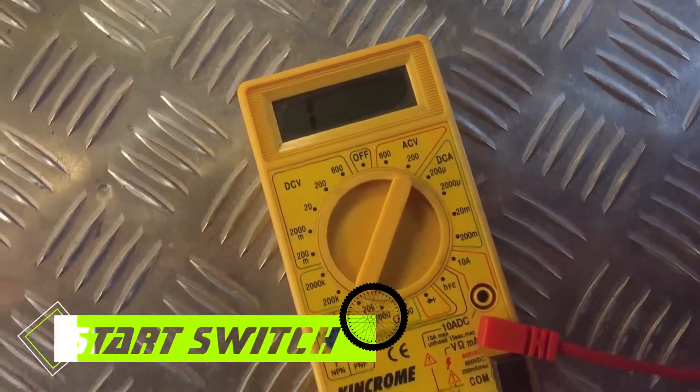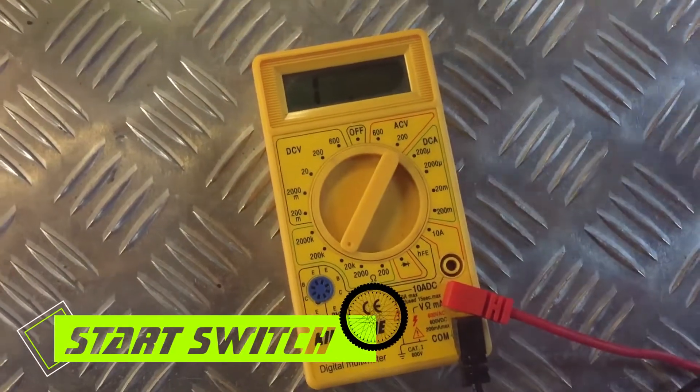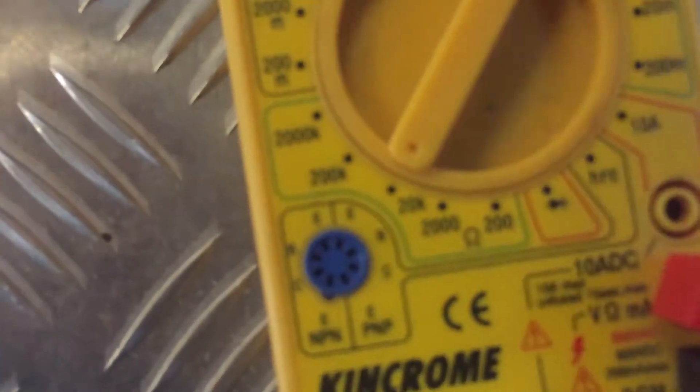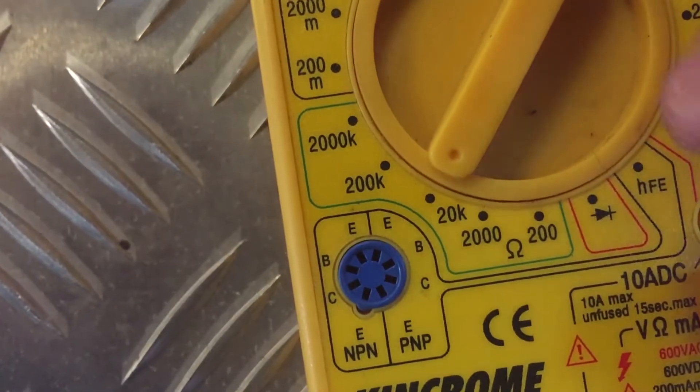Okay, this next test we're going to check our starter switch. So we've set our voltmeter back to ohms, which has the symbol there, and we'll just set it to the lowest one which is 20k.